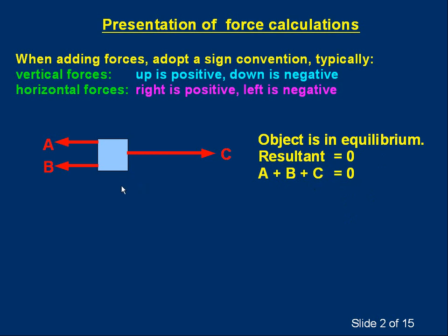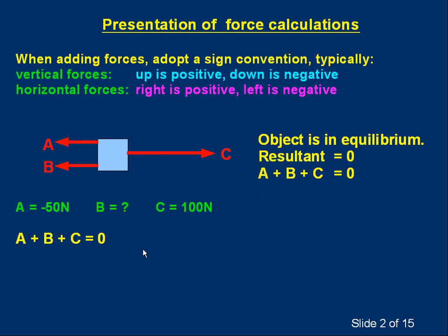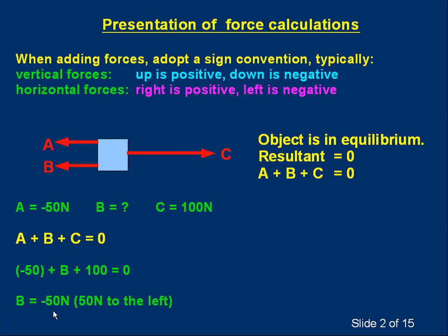For example, suppose A is minus 50 newtons because it acts to the left, B is unknown, and C is plus 100 newtons because it acts to the right. We plug the values into our equation: A plus B plus C equals zero. Replacing: minus 50 plus B plus 100 equals zero. Solving gives B equals minus 50 newtons, which simply means B is 50 newtons to the left. That's the format we're using.